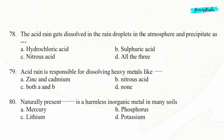Question 78. The acid rain gets dissolved in the rain droplets in the atmosphere and precipitates as Option D: All three.